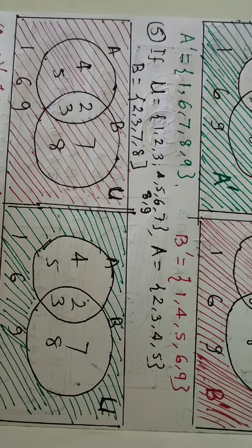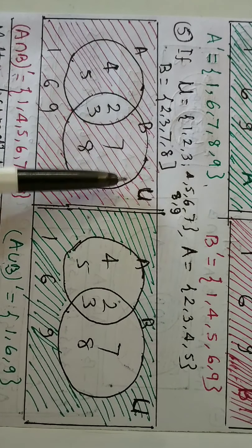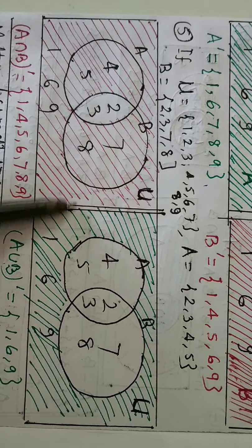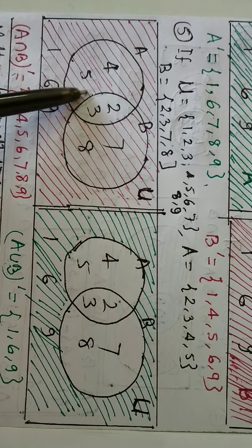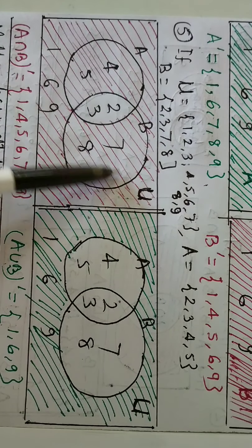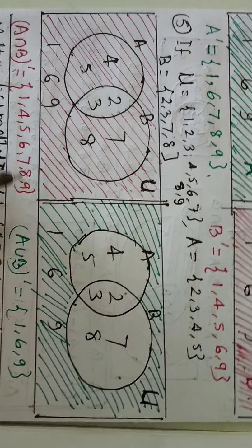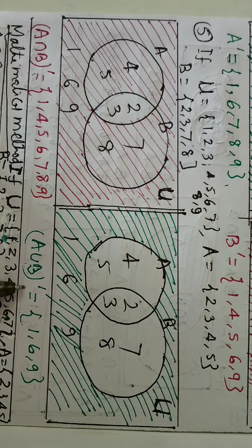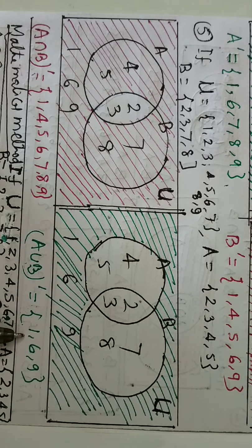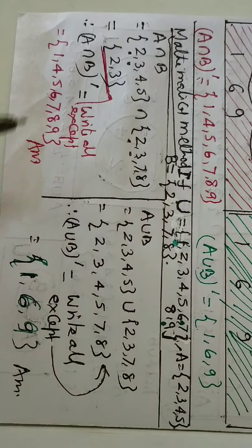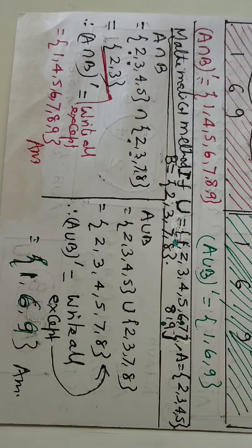Number 5 question: find A intersection B complement and A union B complement. Draw the two figures as before. In the first figure, other than A intersection B, the red shaded portion is called A intersection B complement — so all members except 2 and 3 are written. For A union B, the portion outside is called A union B complement. The mathematical method uses the same alternate approach done earlier.